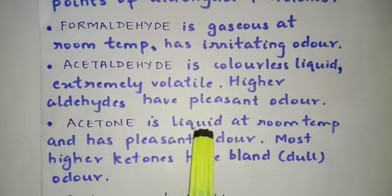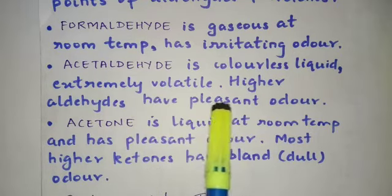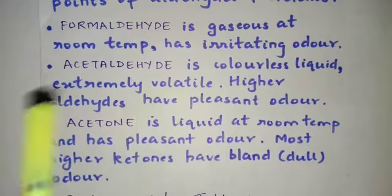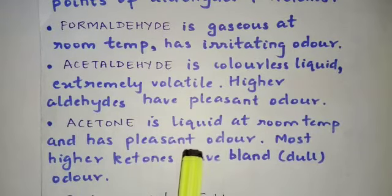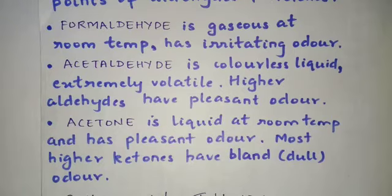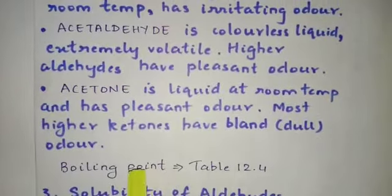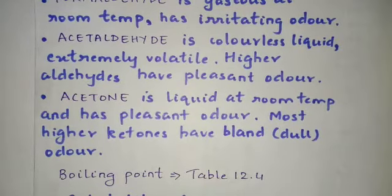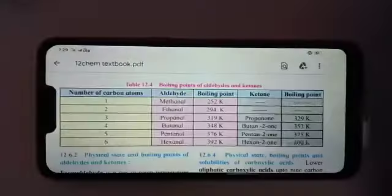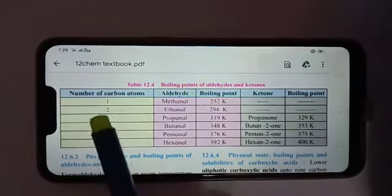For the physical properties, I have taken points from the textbook so everything is covered. Next, we will see the boiling point. For that, I would like to show table 12.4 of your textbook — boiling point of aldehydes and ketones. There are columns for number of carbon atoms, aldehyde with its boiling point, and ketone with its boiling point.